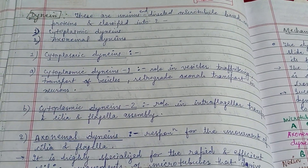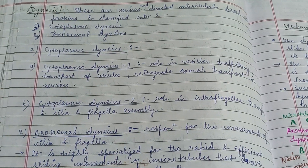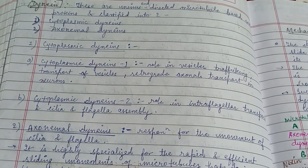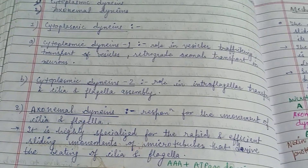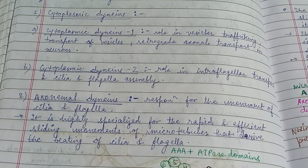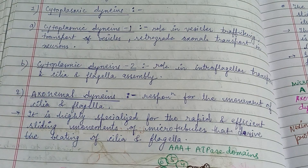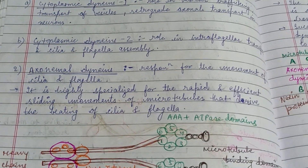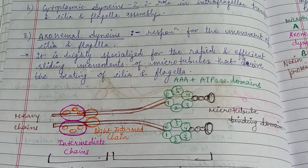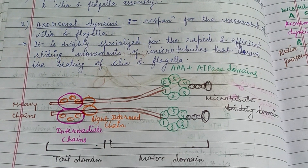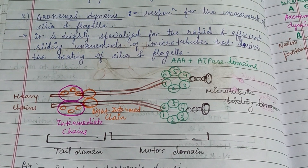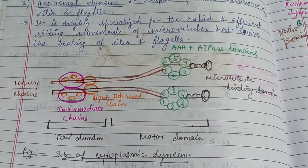Dynein are the minus-end directed microtubule-based motor proteins, classified into two types: cytoplasmic dynein and axonemal dynein. Cytoplasmic dynein is categorized into subtypes such as cytoplasmic dynein 1 and dynein 2. Axonemal dynein is responsible for the movement of cilia and flagella and is highly specialized for the rapid and efficient sliding movement of microtubules that drives the beating of cilia and flagella.